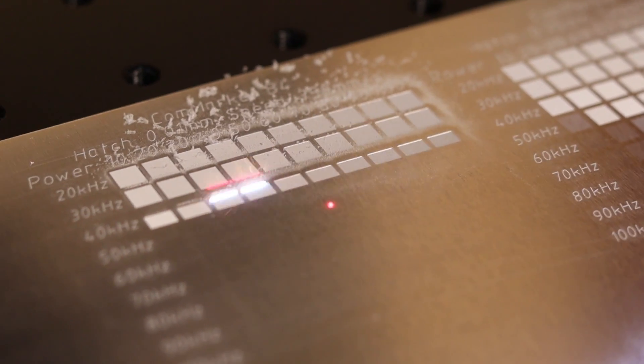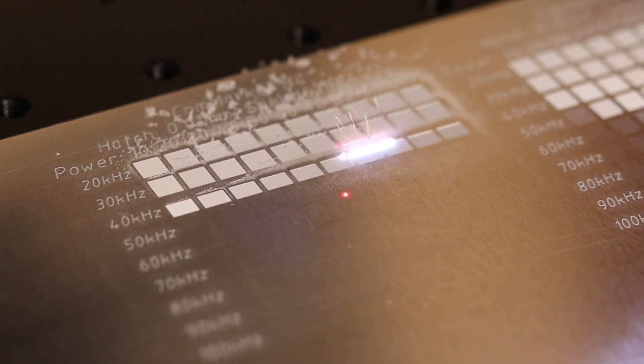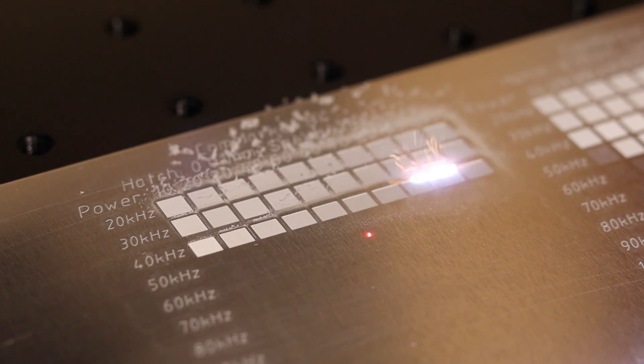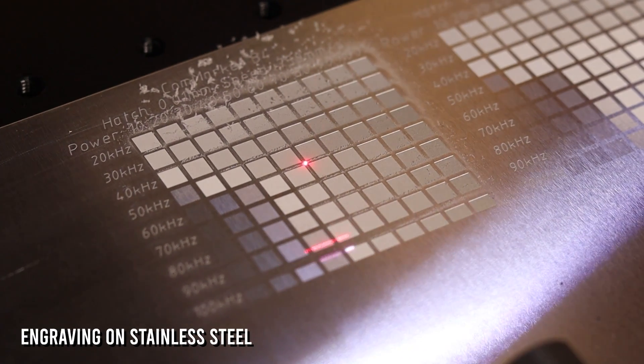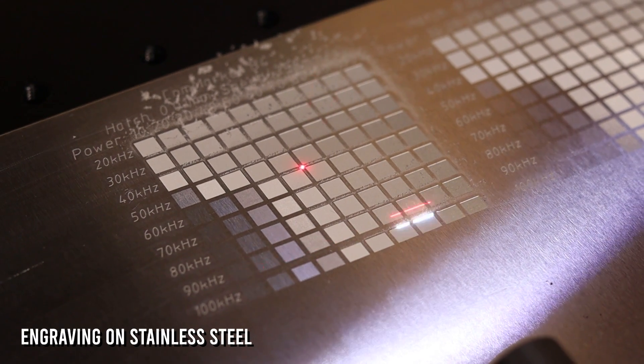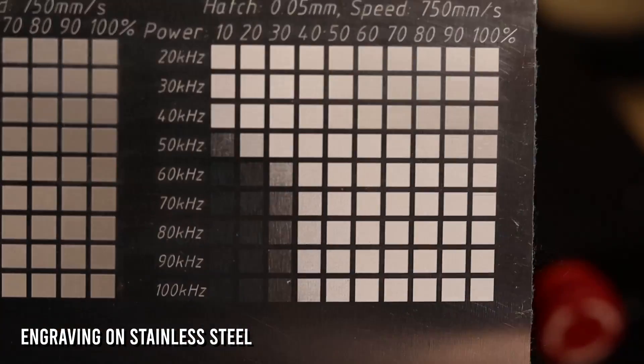Fiber lasers emit very short pulses of light. The average power of these pulses is the specified power of the laser which is 20 watt in this case. But these pulses can reach 100 or even 1000 times the laser's rated power because they are very short. This is why these lasers are very good at engraving metals as the high powered pulses vaporize metals instantly.